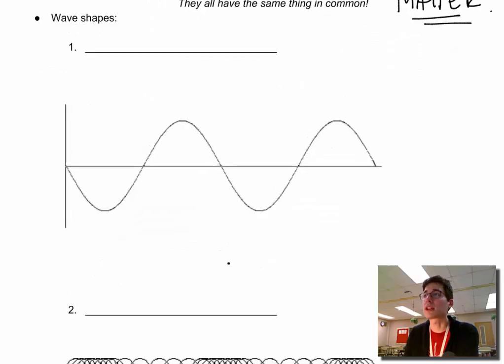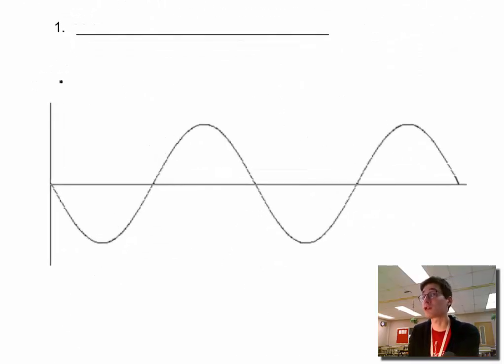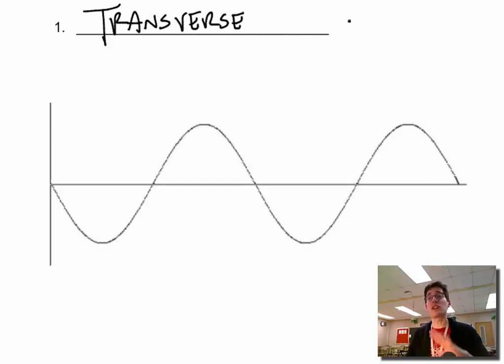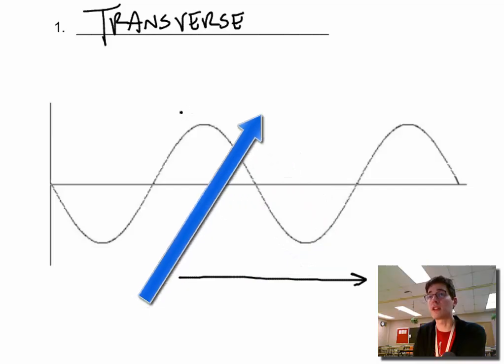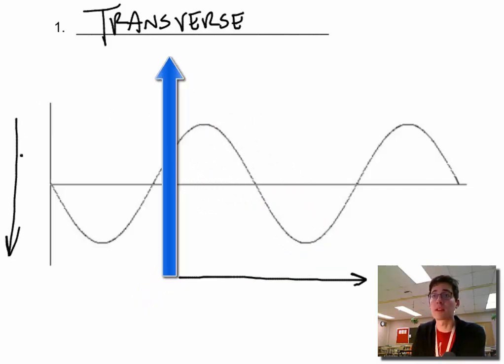There's two major kinds of mechanical waves. The first being transverse. And this has a very simple definition. The wave is 90 degrees offset from the direction of travel. What do I mean by that? I mean, if my wave is moving on your screen from left to right in that direction, then the wave itself is 90 degrees offset. So if this would be 0 degrees and 90 degrees, it means I'm moving up and down.